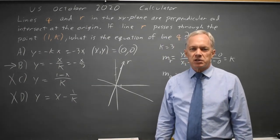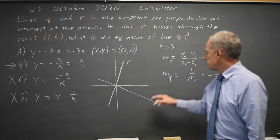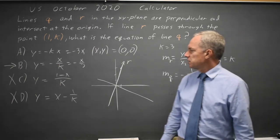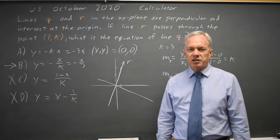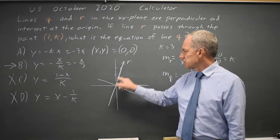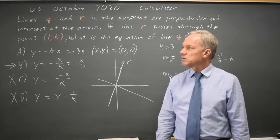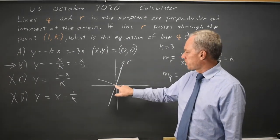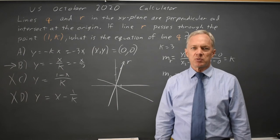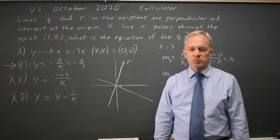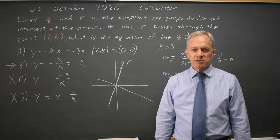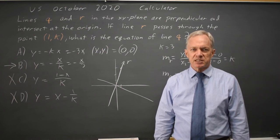Both methods work — the algebraic method of finding the slope of the perpendicular line, and the graphical method: make up a number for K, sketch the graph for line R which passes through the origin and the point (1, K), and then sketch the perpendicular. Just go with whichever one is faster for you, and come back soon for my next SAT video. With math, there's always more.